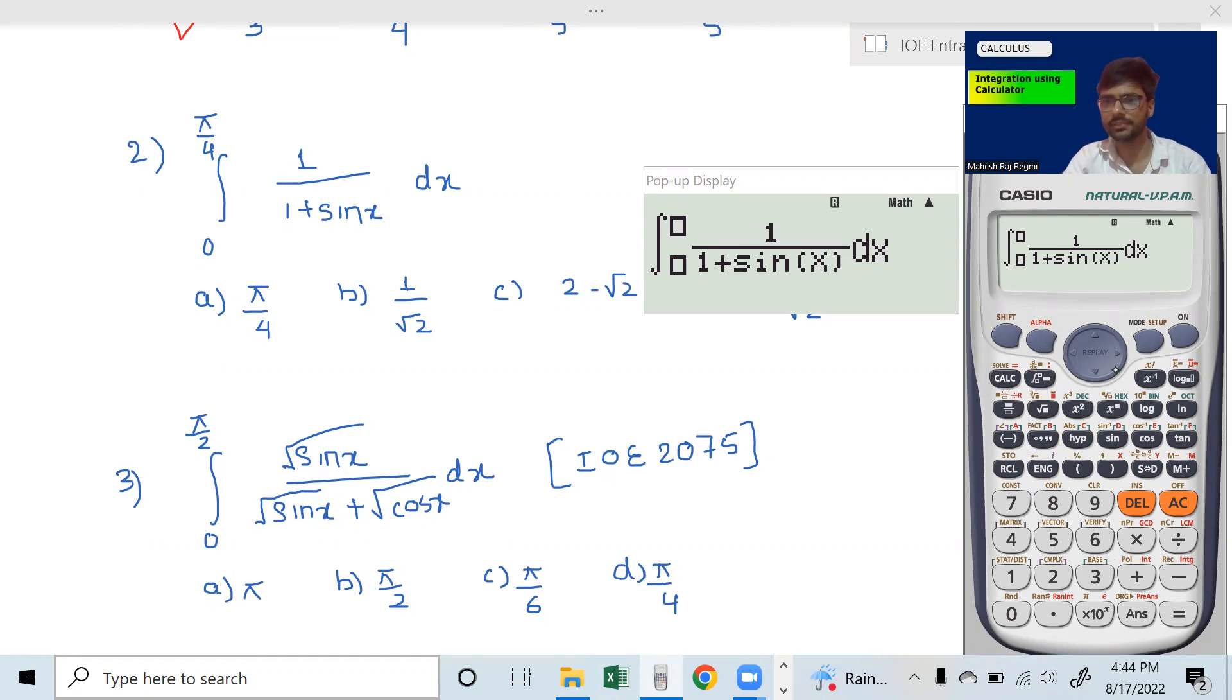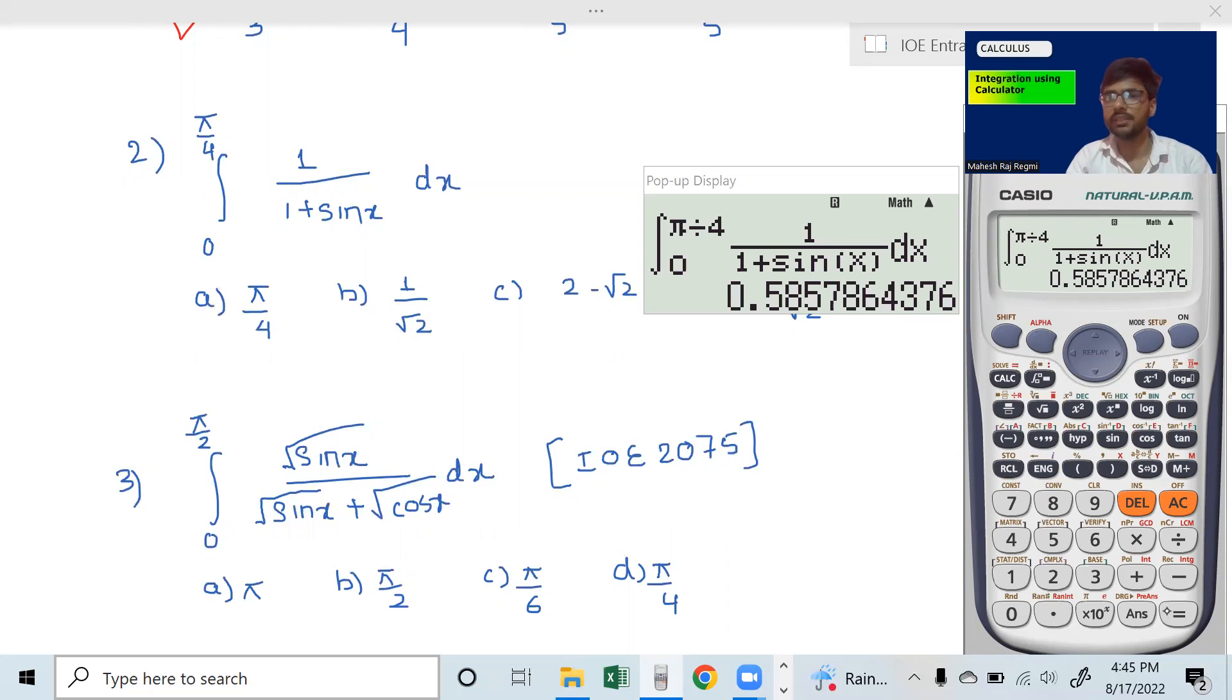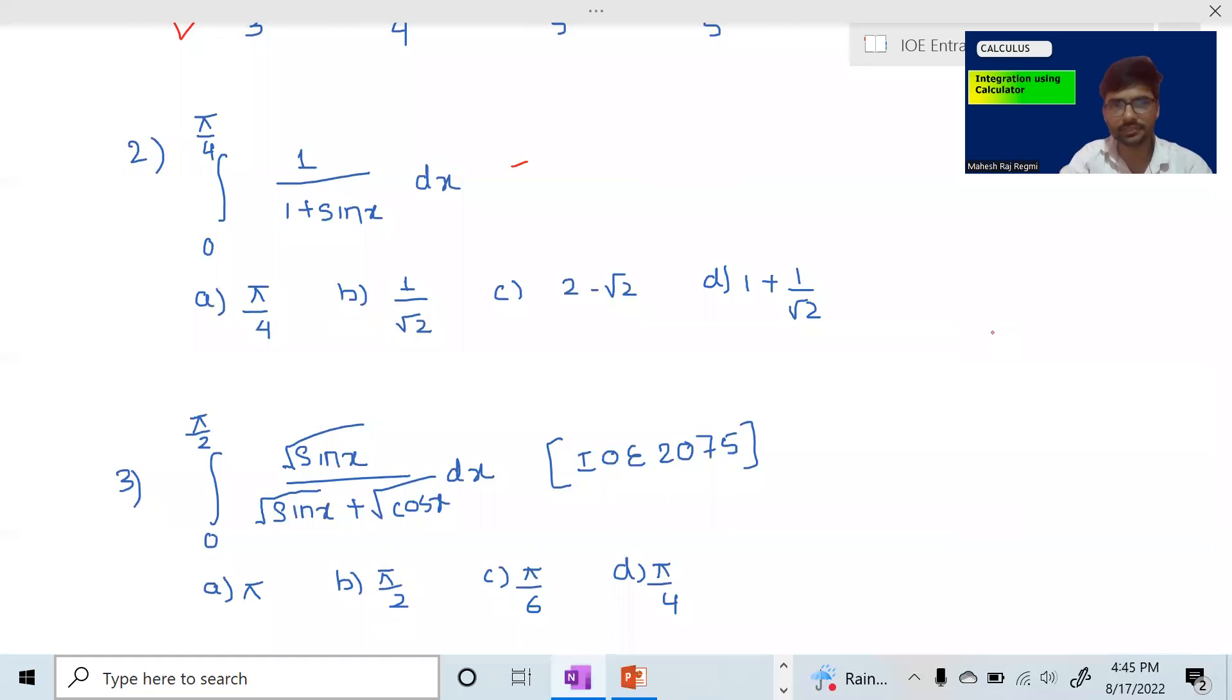One divided by one plus sine x, one plus sine alpha x. The limit is zero to pi divided by four. The answer is 0.585.